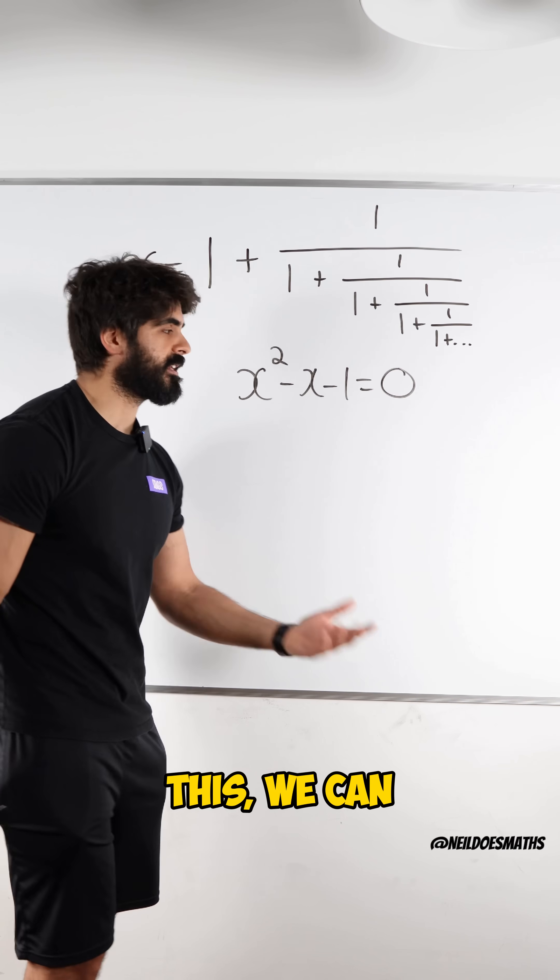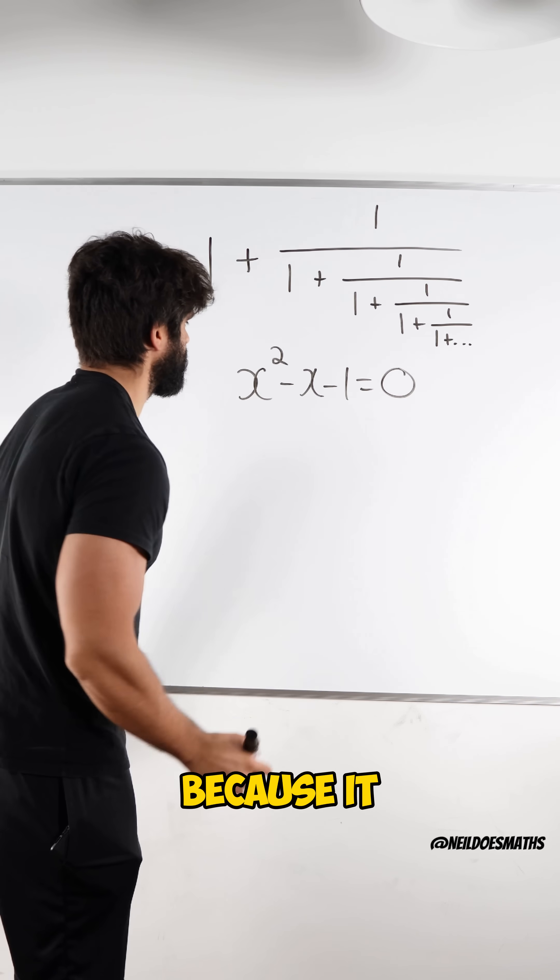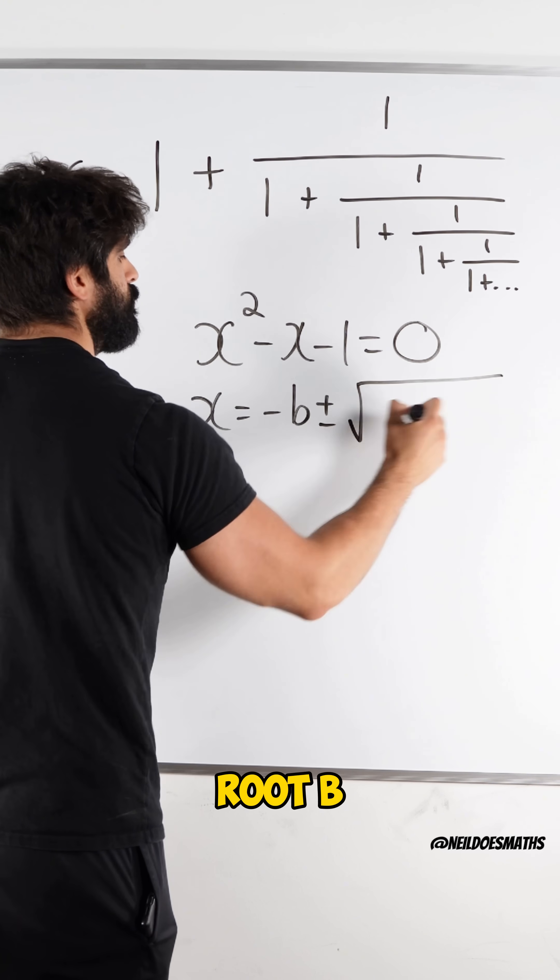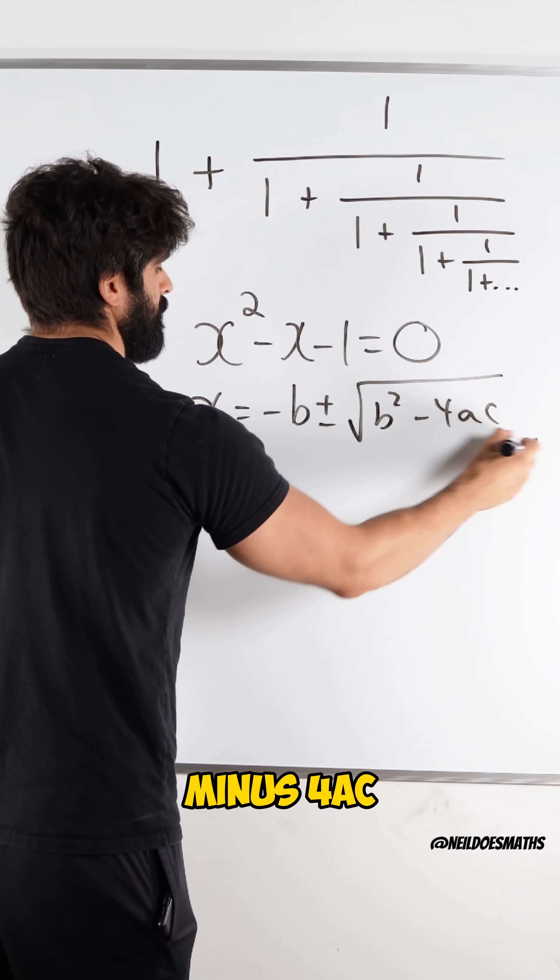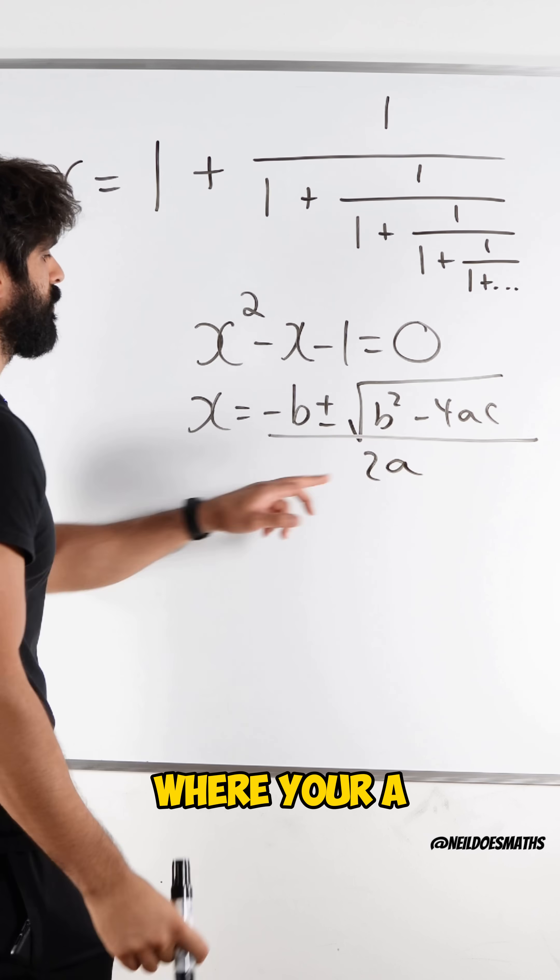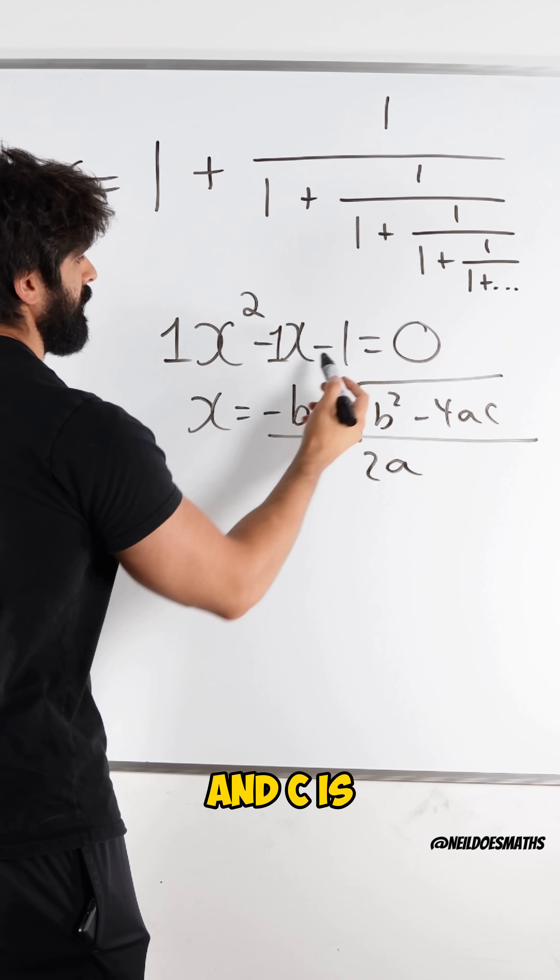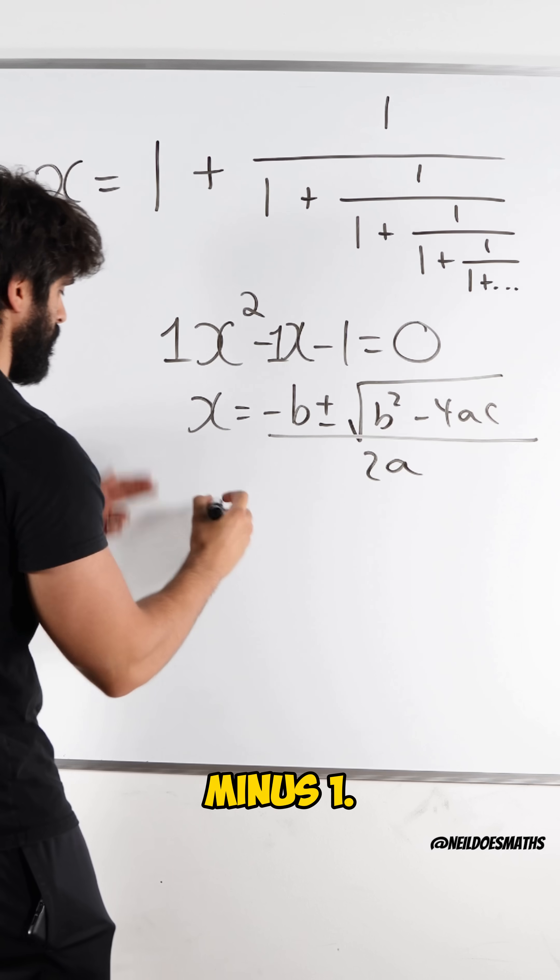To solve this, we can very quickly use the quadratic formula because it doesn't simplify. The quadratic formula says x is negative b plus minus root b squared minus 4ac all over 2a, where a is the coefficient of x squared 1, b is the coefficient of x minus 1, and c is the constant minus 1.